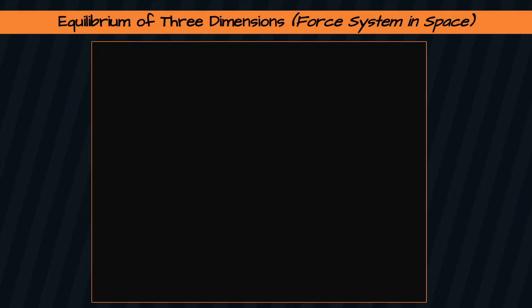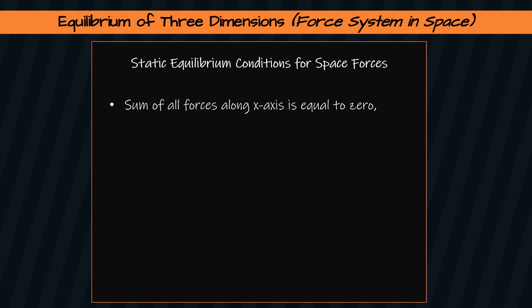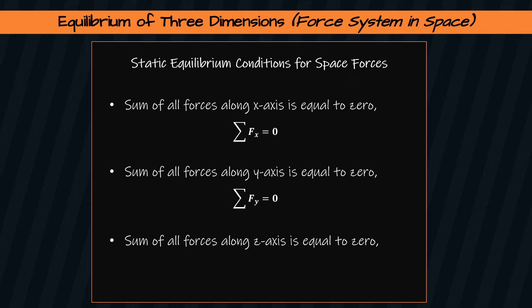A structure in three dimensions that is in space must satisfy the following six requirements to remain in equilibrium when acted upon by external forces. First, sum of all forces along x-axis is equal to zero. Second, sum of all forces along y-axis is equal to zero. Third, sum of all forces along z-axis is equal to zero.